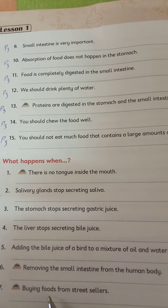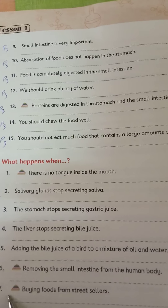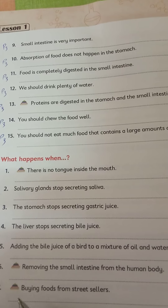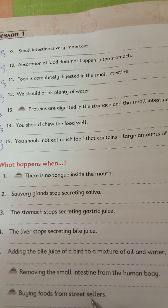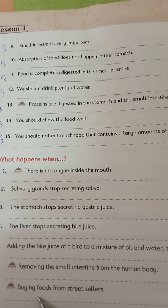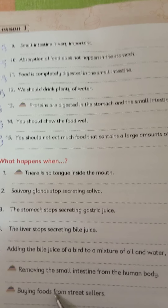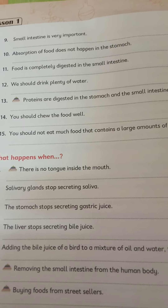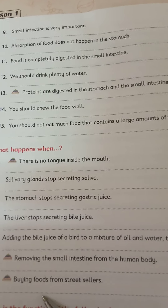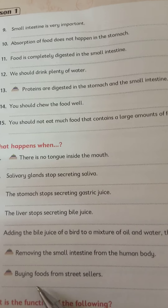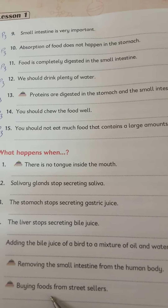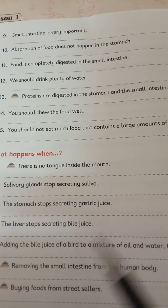Number seven: buying food from street sellers. What happens when you do this? It leads to harmful diseases. Don't forget to give a like and subscribe to my channel. Goodbye!